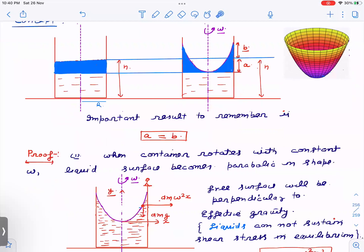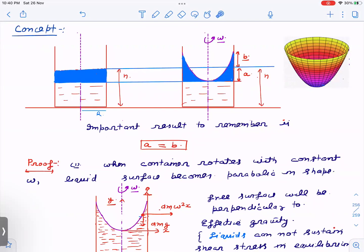So here, the scenario is that if there's a container, cylindrical container I'm taking of radius R and height H. If this container starts rotating about its central axis with a constant omega, then profile becomes like that. I hope you know this.